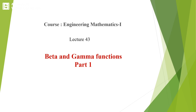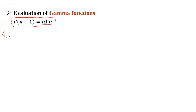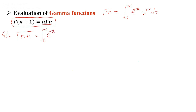Lecture 43: Beta and Gamma functions. As you know, Gamma(n) is the integration from 0 to infinity of e raised to power minus x, times x raised to power n minus 1, dx. Now if you want to write Gamma(n+1), it means we replace n with n+1, so we write n+1 minus 1, giving x raised to power n.